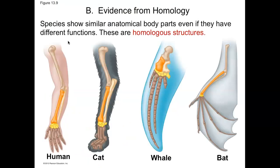Evidence from homology: if you compare how bodies are put together structurally — the anatomical similarities — that's homology. Homology is the comparison of body structure between different species, and it shows that evolution is a remodeling process in which ancestral structures become modified as they take on new functions.